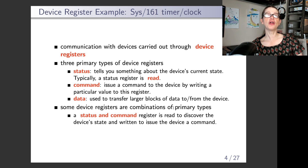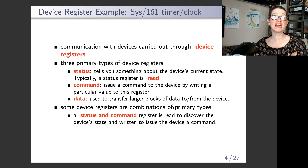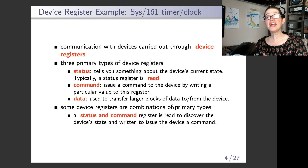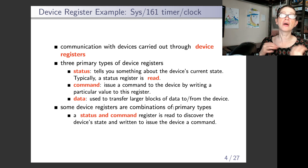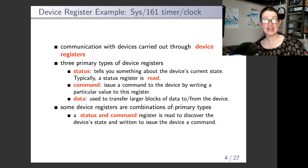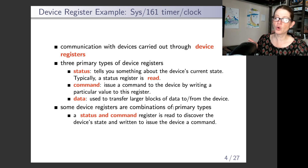Then we have a third kind of register called the data register. The data register tends to be a bit bigger and is used to transfer data to and from the device — it is both read and written. For example, if I want to write data to my hard drive, I write a chunk of data to the data register and that causes it to be written to disk. To save space, they've actually combined a lot of these registers together — so you'll typically see a status and command register where you read to get status and write to issue a command.